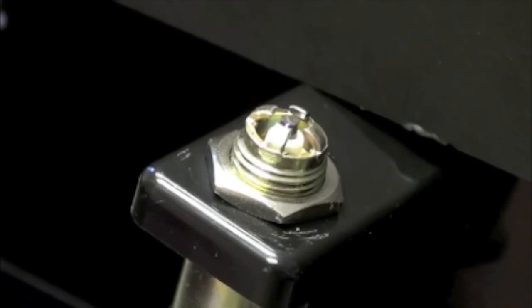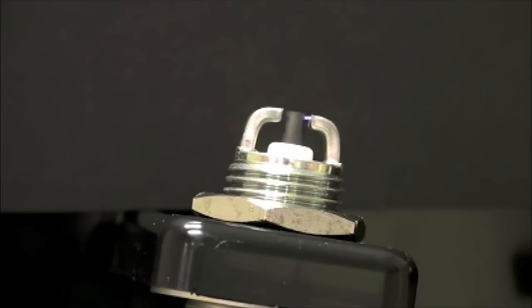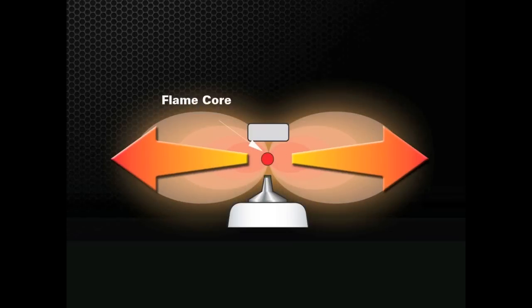The increased durability and fouling protection provided by multiple ground electrode spark plugs often comes at the cost of ignitability. Because of the increased electrode mass in the combustion chamber, the flame kernel can only expand so far because some of the heat energy from the spark is lost, which can reduce or even extinguish the flame kernel.